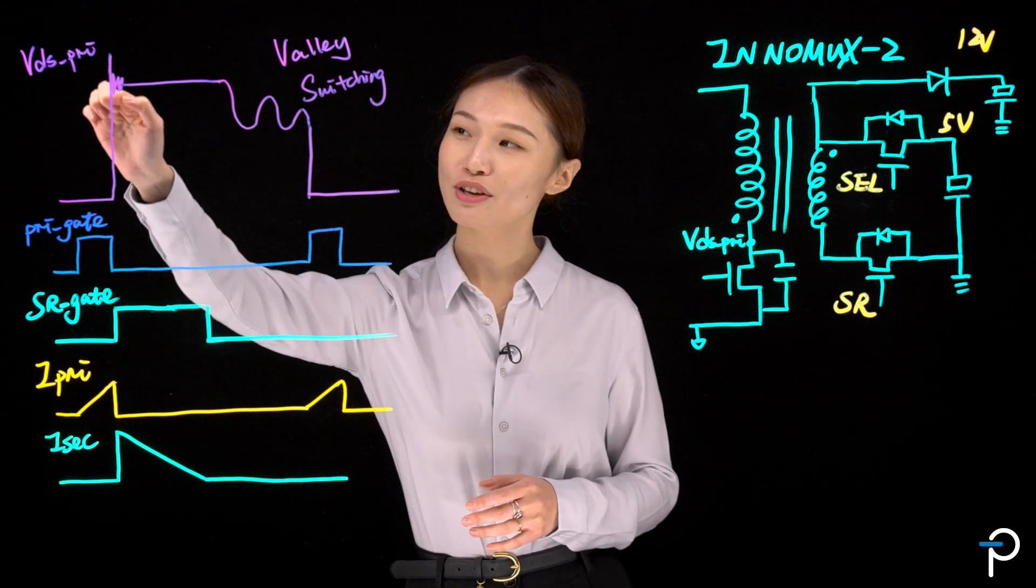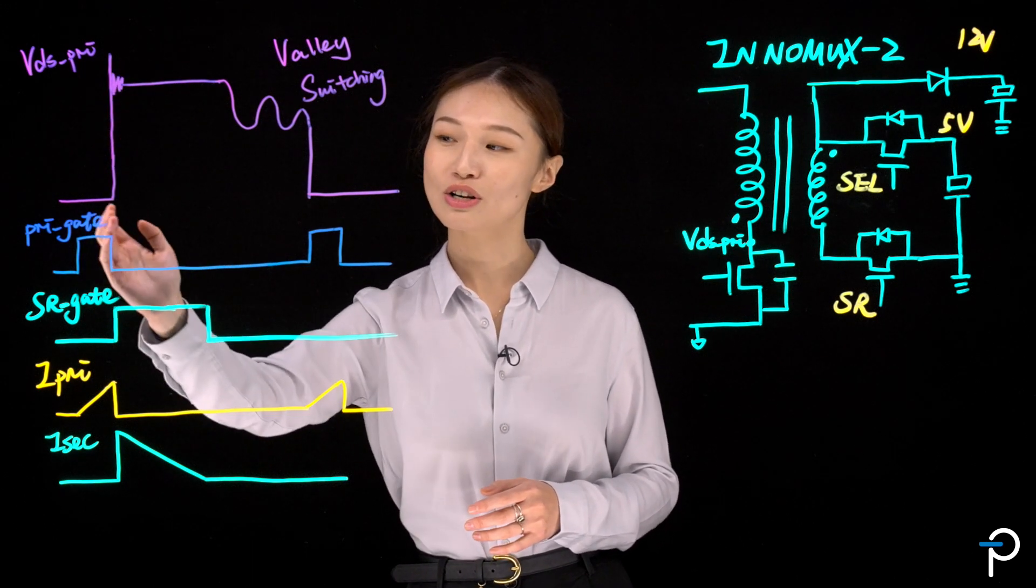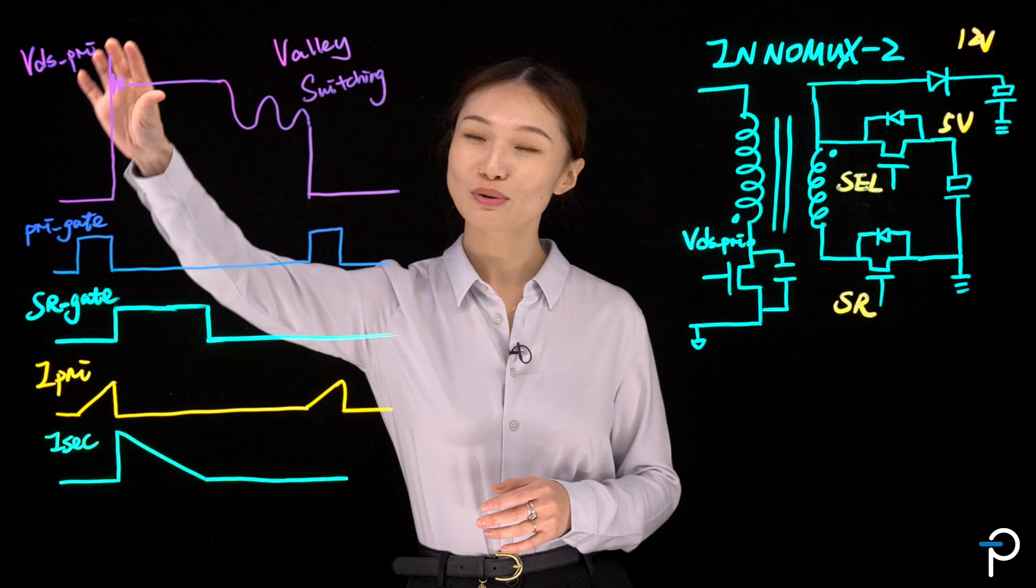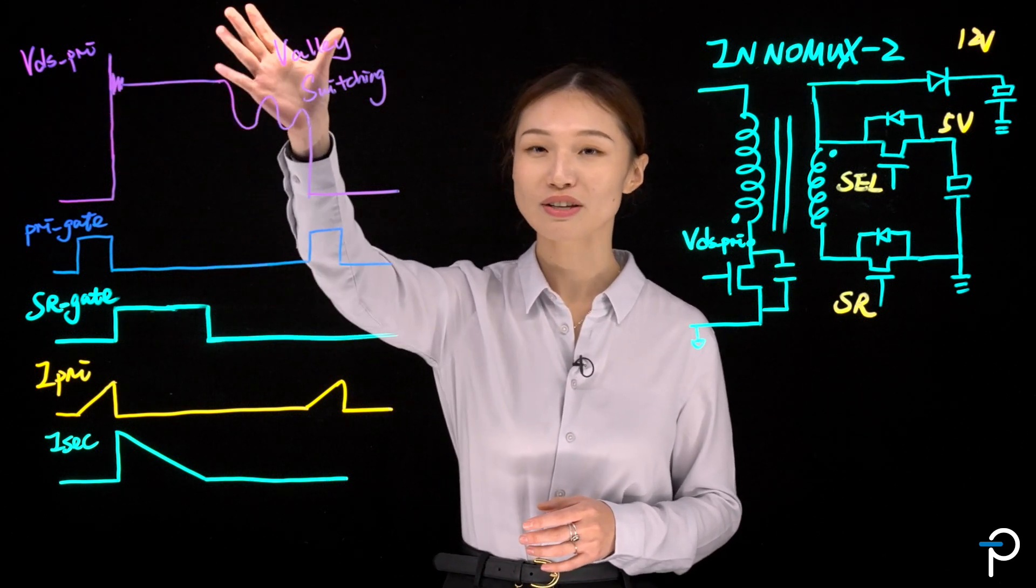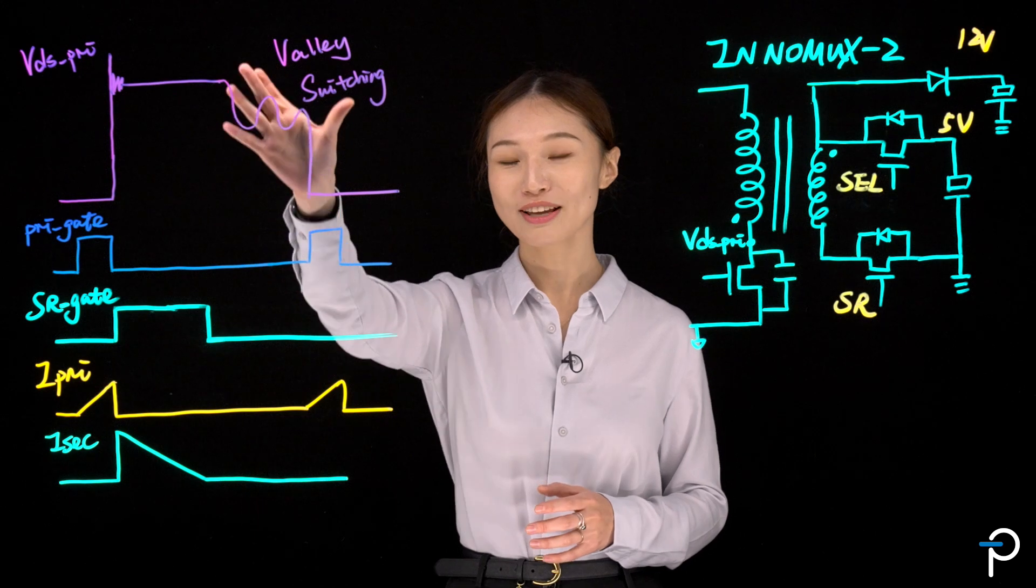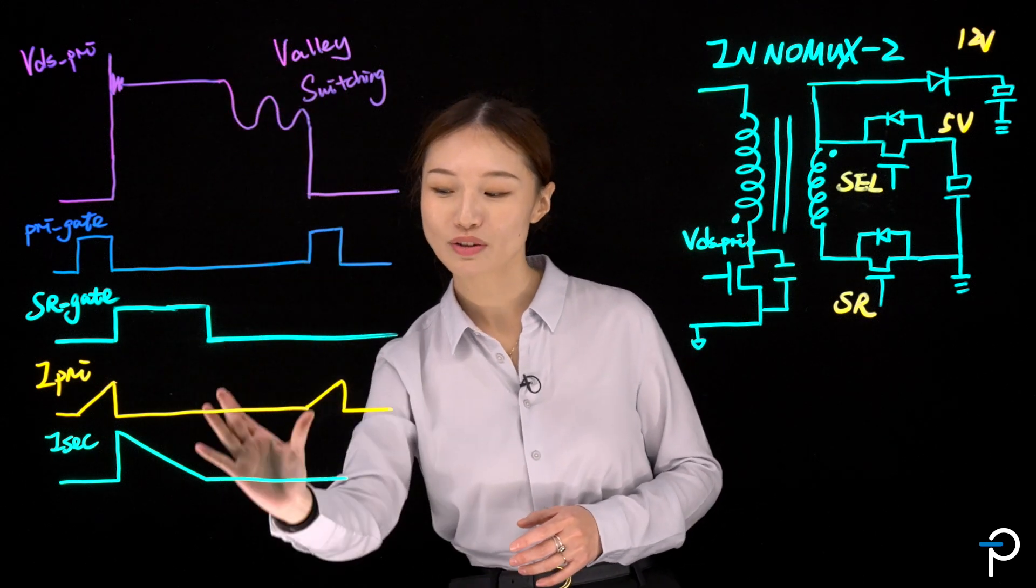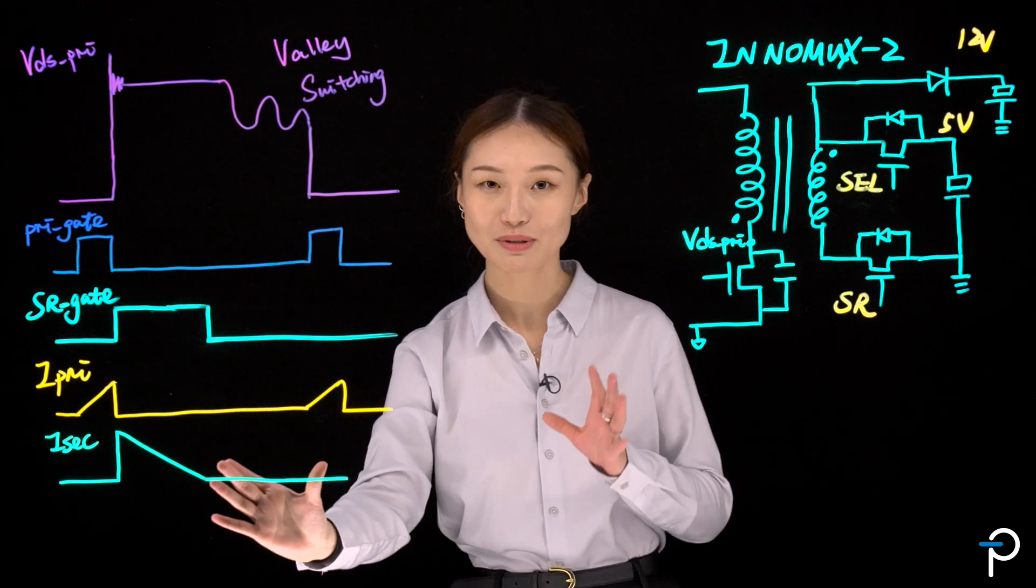So this over here is caused by the leakage inductance. When you turn off the primary switch, you'll see that voltage spike on your VDS primary. And this over here is what we call the idle ring. And it happens when your secondary discharge current becomes discontinuous.